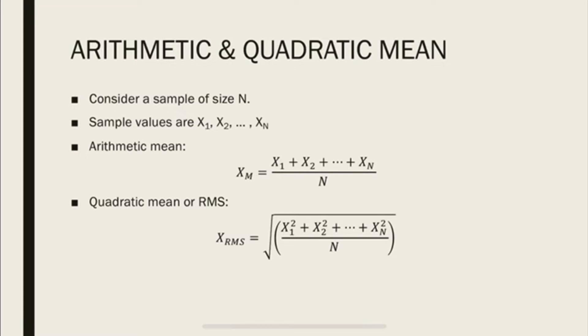So let's consider sample size of N and let's say the sample values are x1, x2 all the way up to xN. Now the arithmetic mean is just a basic mean that we all know from high school. It's just sum of all the values from x1 to xN and divide it by the number of the sample size, which is N. And that's the arithmetic mean.